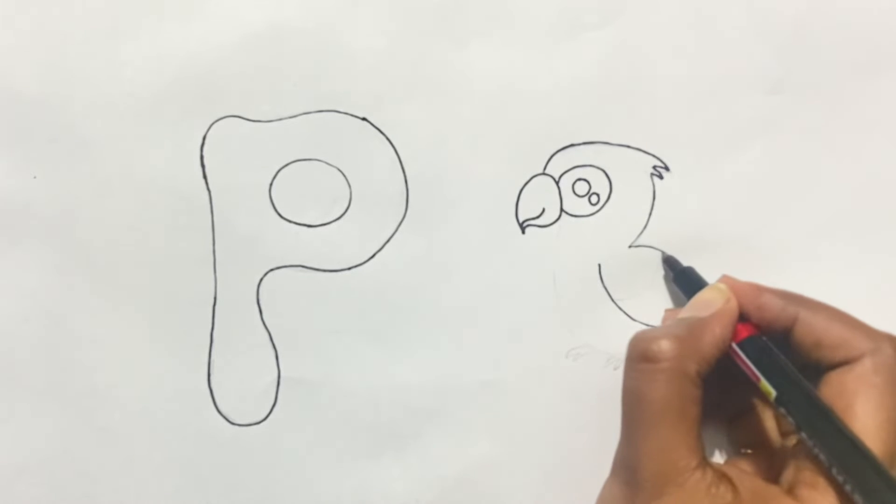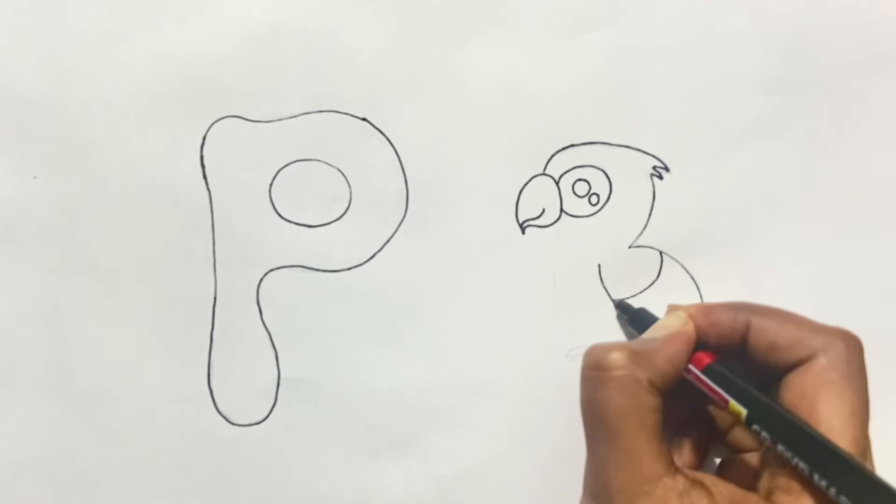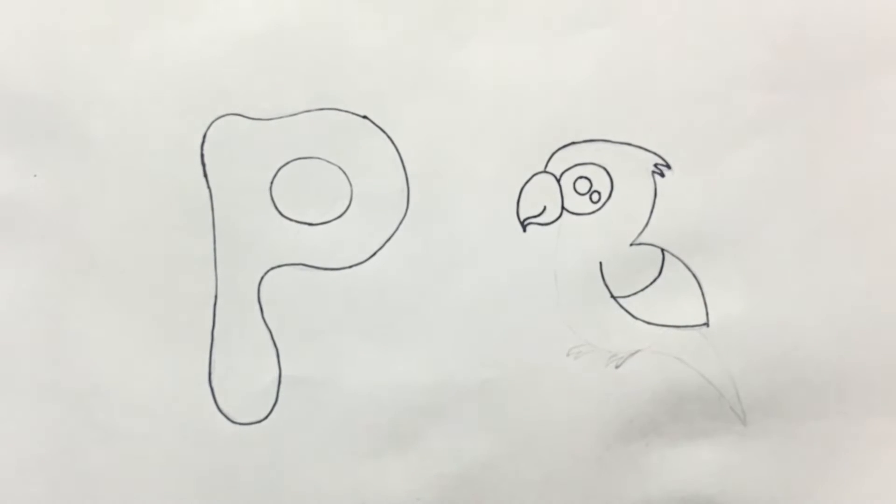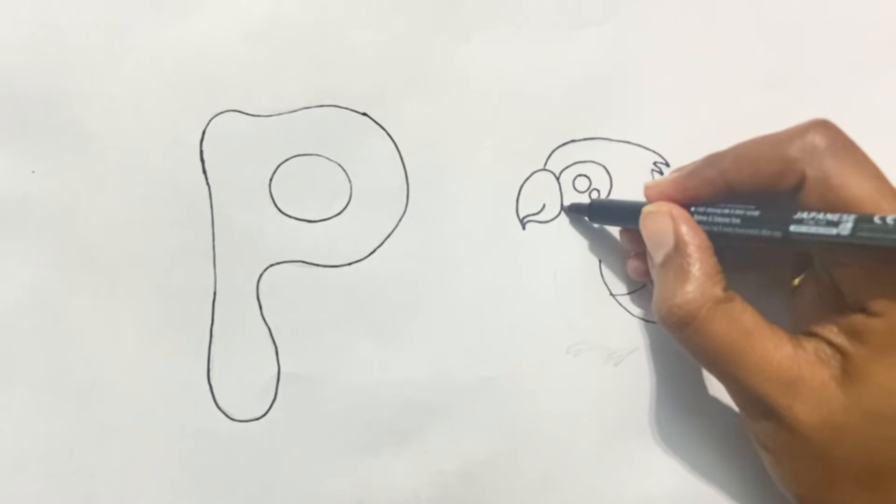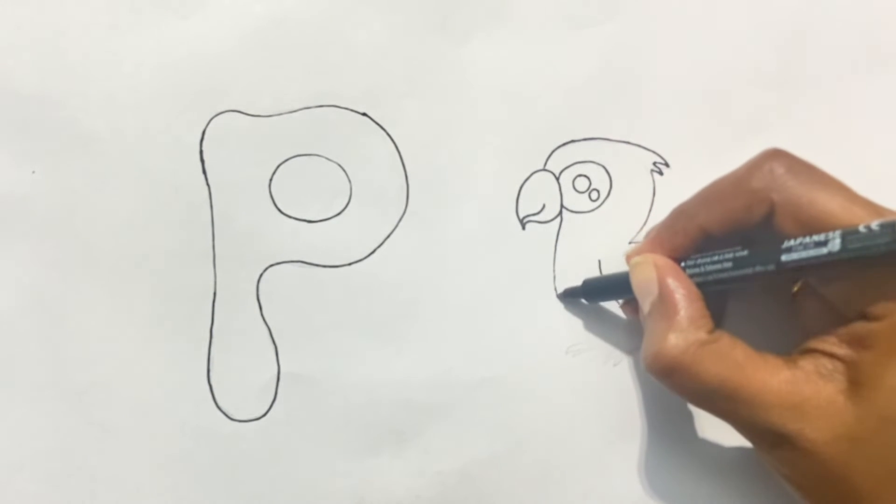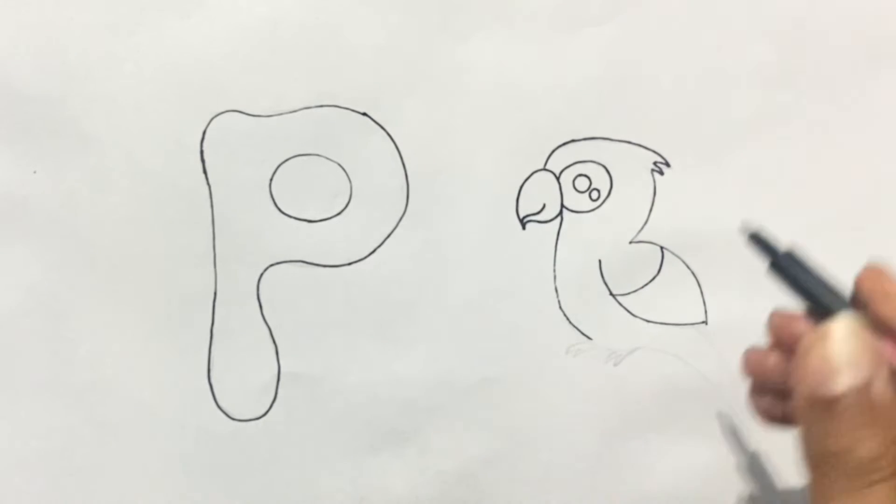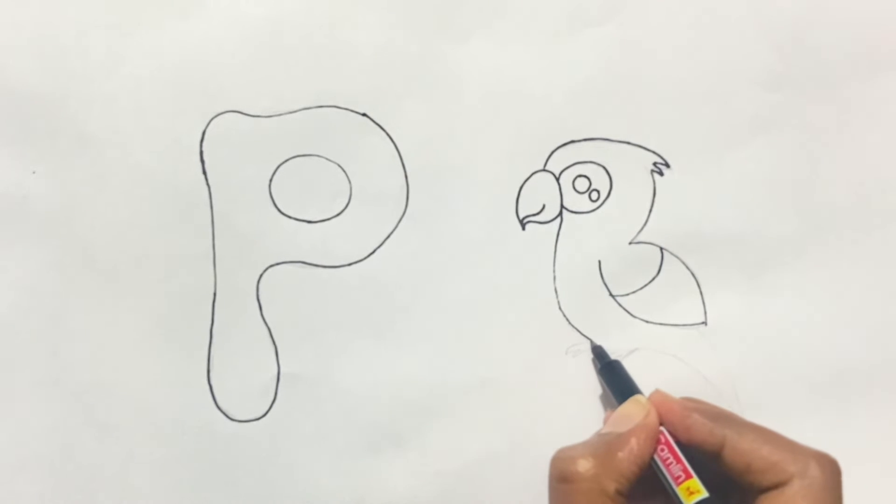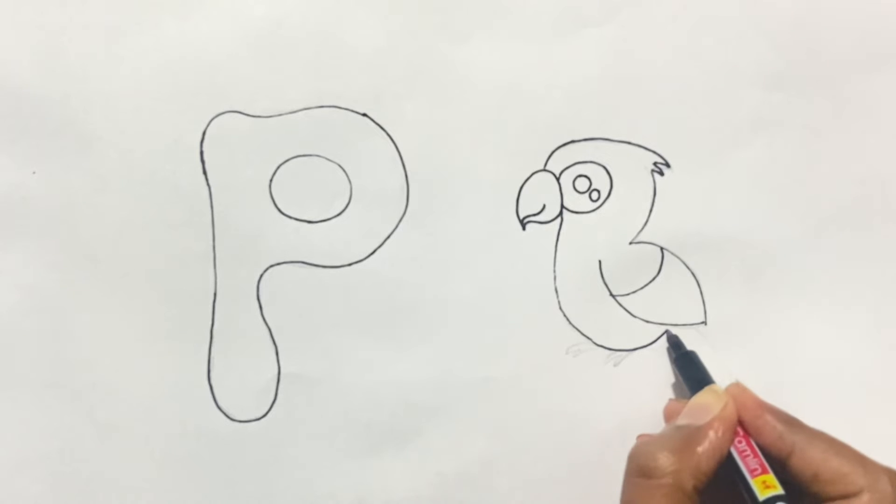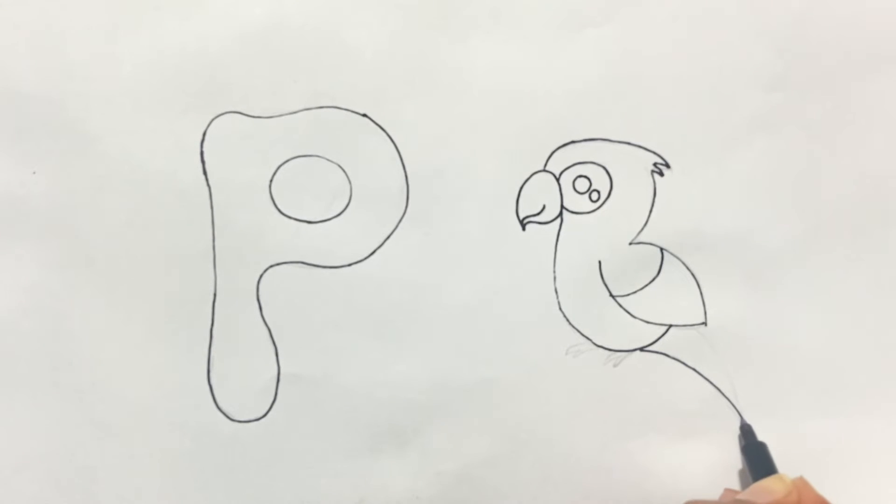Join it, and then a semi-circle for the wing. Now we will make the body of the parrot. Just join the two ends in a circular motion and it's done. A small half U, and now we will make the tail.